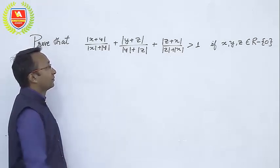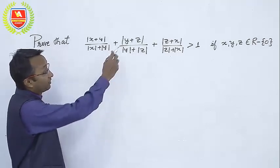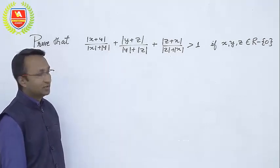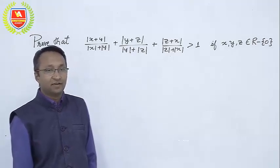This is the question. Prove that |x+y|/(|x|+|y|) + |y+z|/(|y|+|z|) + |z+x|/(|z|+|x|) > 1, where x, y, z are given to be non-zero real numbers.